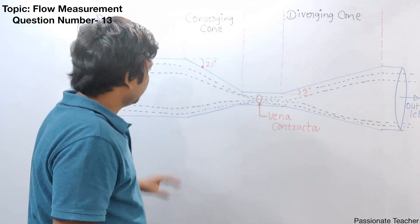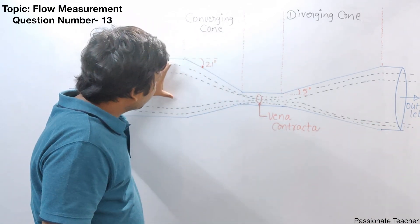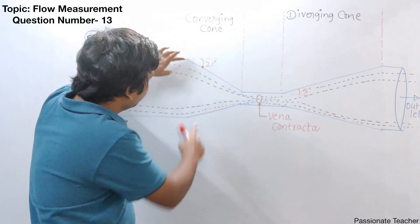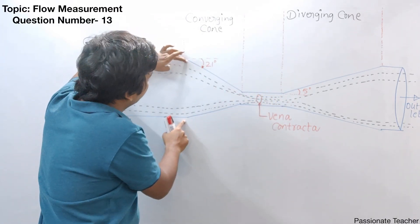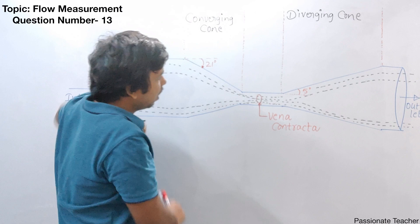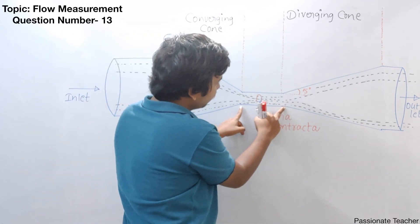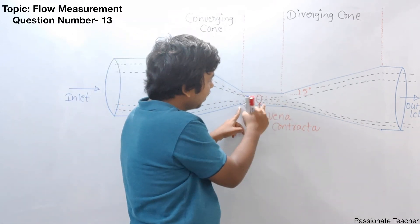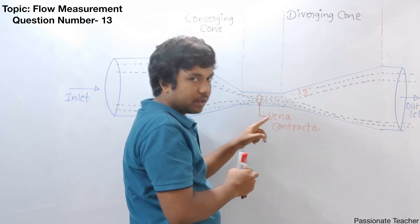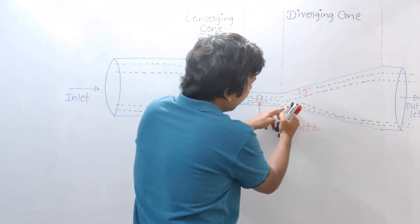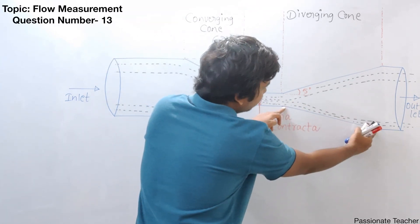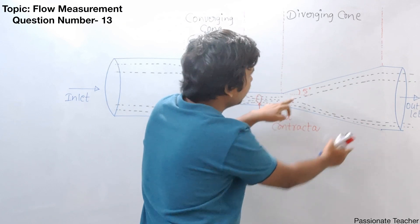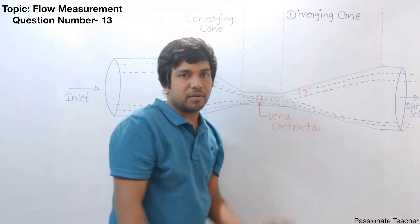What happens in this case is, as the venturimeter construction looks like this, this part is called the converging cone. And here, usually the length of this part is very less, and this is the part where we get the vena contracta. The other side, downstream, is called the diverging cone.